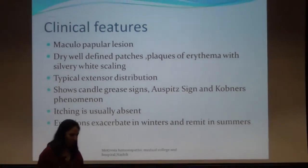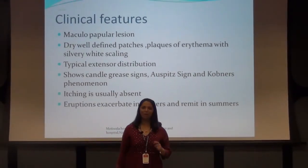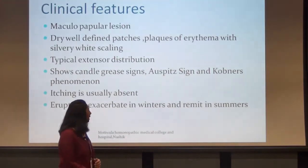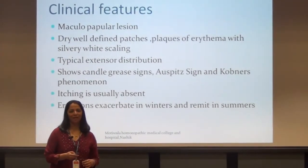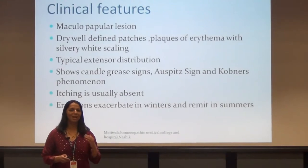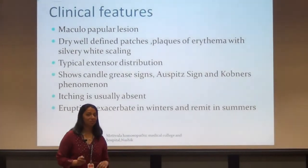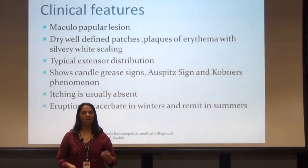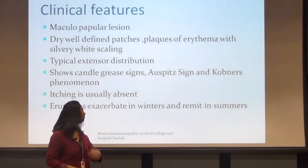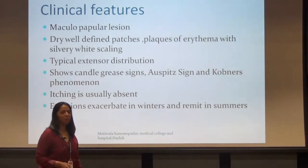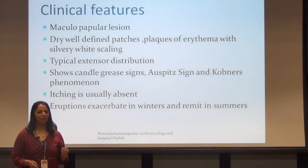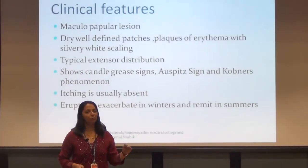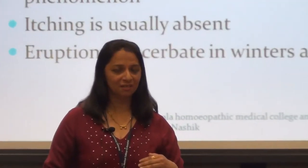Clinical features of psoriasis: since you have understood the pathophysiology, clinical features are easy to understand. Lesions are maculopapular — meaning discolored, slightly raised lesions. They are dry, well-defined, and erythematous, showing scaling which is silvery white in colour. There is typical extensor distribution. It is seen that extensor surfaces are more involved compared to flexural surfaces, though this is not an absolute rule.